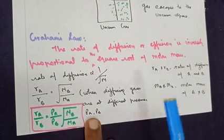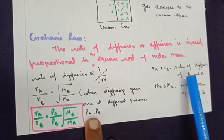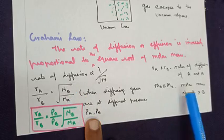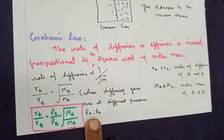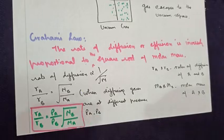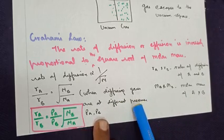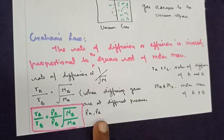You know, Ra and Rb stand for rates of diffusion of A and B, two different molecules. Ma and Mb stand for molar mass of two different molecules, A and B. When they diffuse or effuse, they exhibit certain pressures given in terms of Pa and Pb.